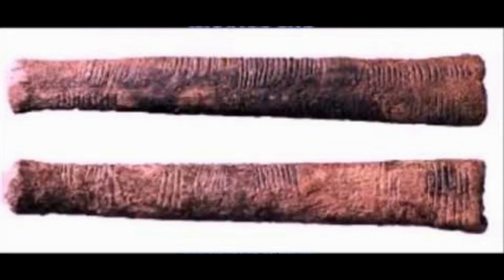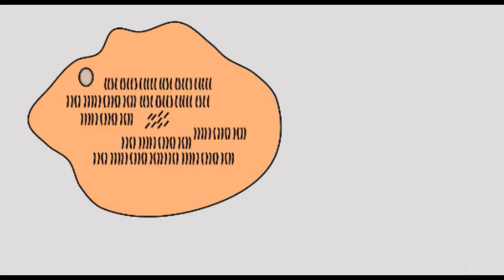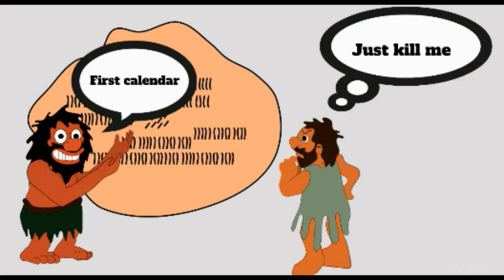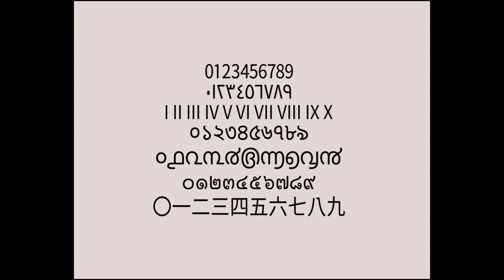However, they must have quickly realized using a single stroke for each item was cumbersome when it came to higher numbers, and they needed better ways to represent larger numbers. Through time, different civilizations developed different systems for representing numbers, mostly based on 10 symbols.